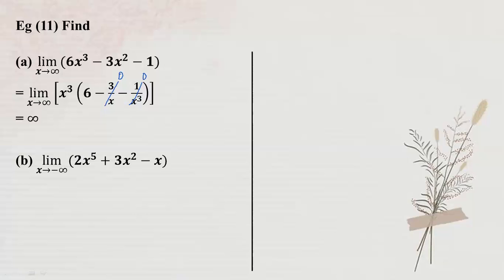Now let us look at the limit of 2x⁵ plus 3x² minus x as x tends to minus infinity.